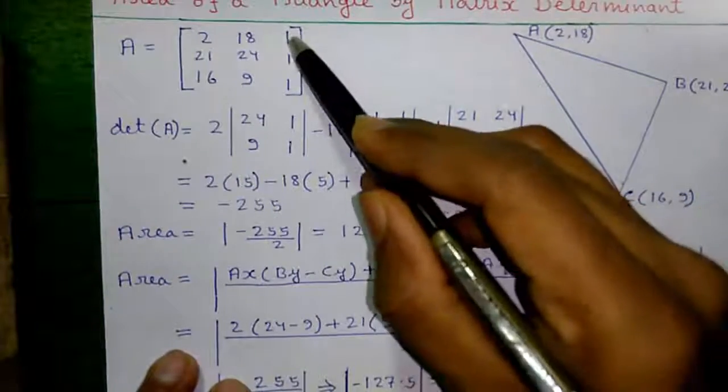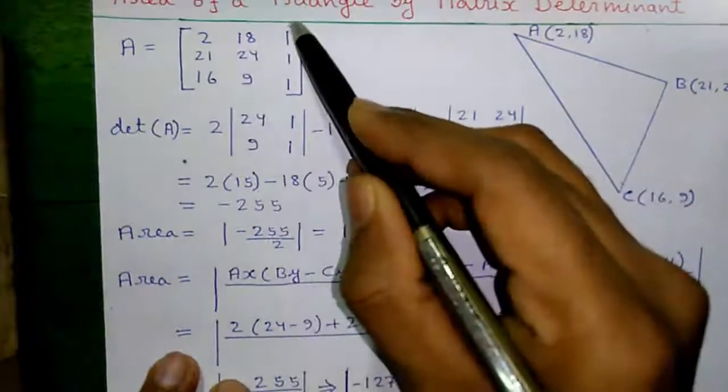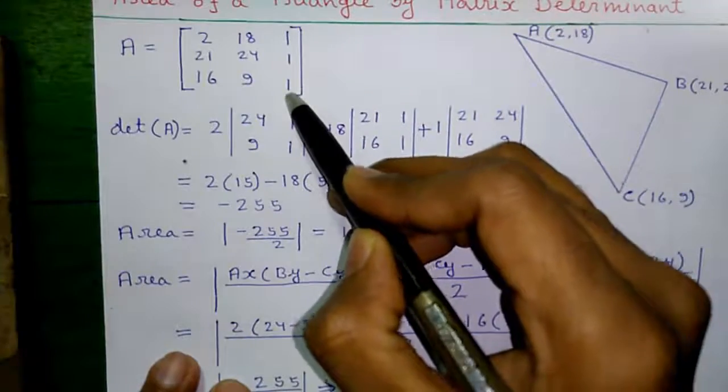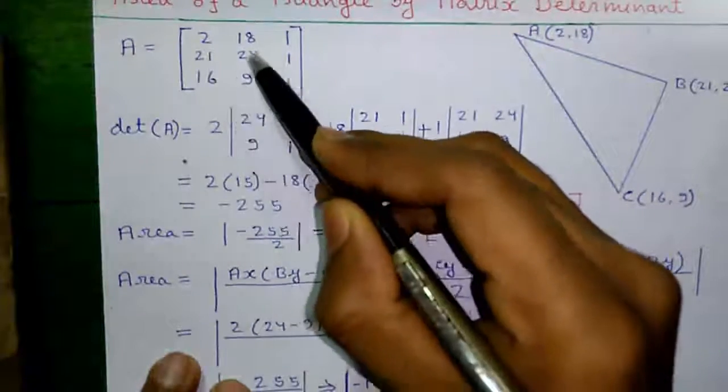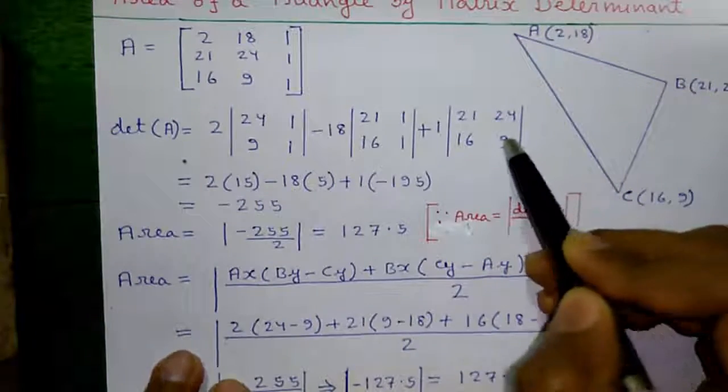Plus, the third element, which is 1 into hide row 1 and column 3. So, we are left with 21, 16, 24, 9.